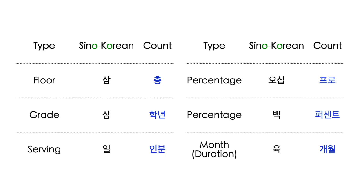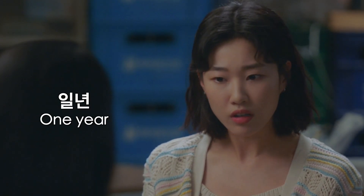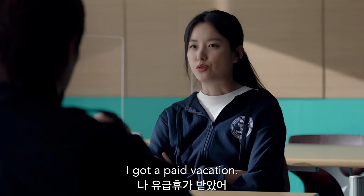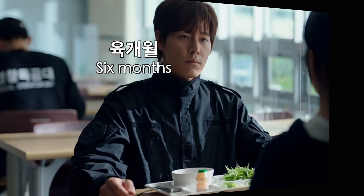When saying month in terms of duration or a period of time, 개월 is the appropriate counter. 6개월 refers to a period of six months. Note that 유월 is the sixth month of the year used for a specific date, while 6개월 is used for duration.